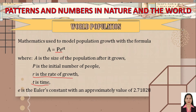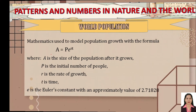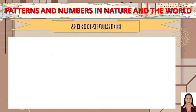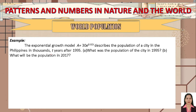We also have e, Euler's constant, with an approximate value of 2.71828. This formula represents the exponential growth model for world population.